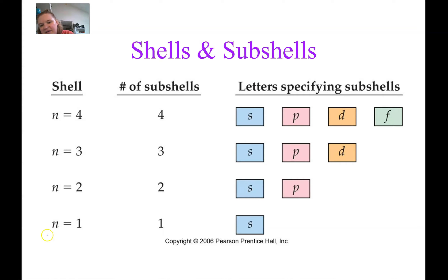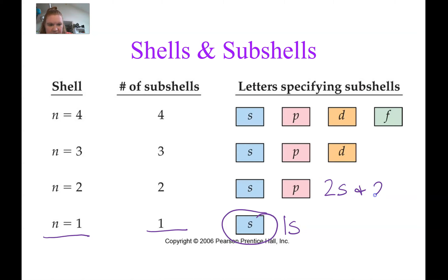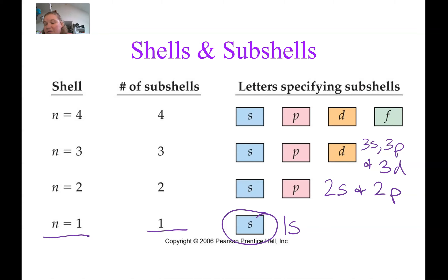Here's a summary of shells and subshells. The first shell has one subshell, the S, labeled 1S. The second shell has 2S and 2P subshells. The third shell has 3S, 3P, and 3D. The fourth shell has 4S, 4P, 4D, and 4F. Beyond that — shells 5, 6, 7 — the maximum number of subshells is still 4, but we won't be looking at those in this course.